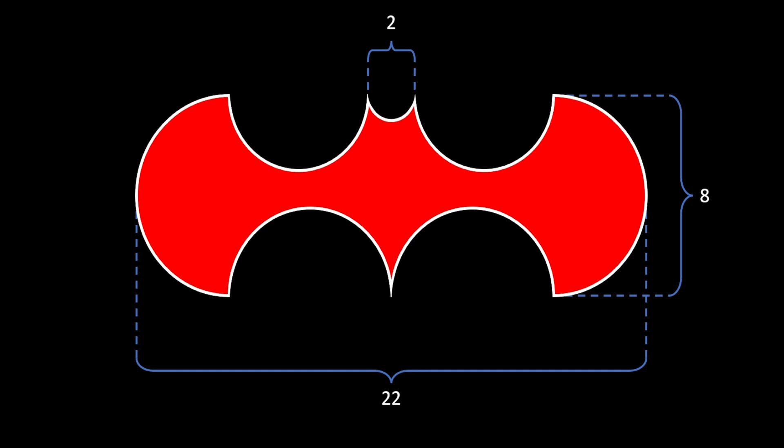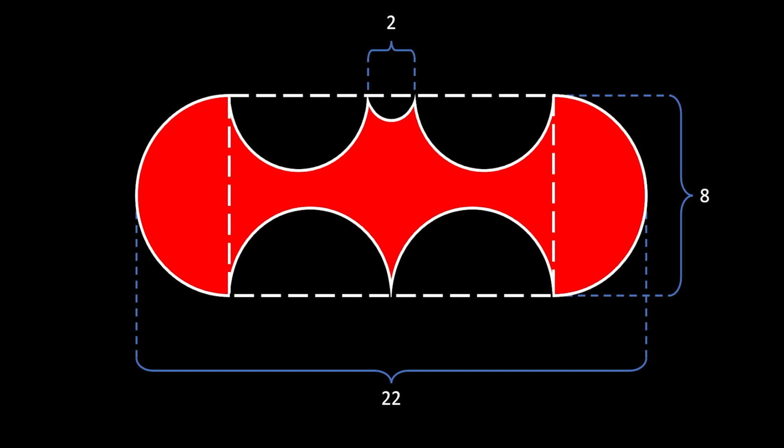We are going to get to the solution right now. In order to solve this, we first need to simplify it a little bit. We're going to do that by drawing a rectangle in the middle. This way we divide it into two sections: the first will be the strange shape inside the rectangle, and the second will be those two semicircles outside the rectangle.